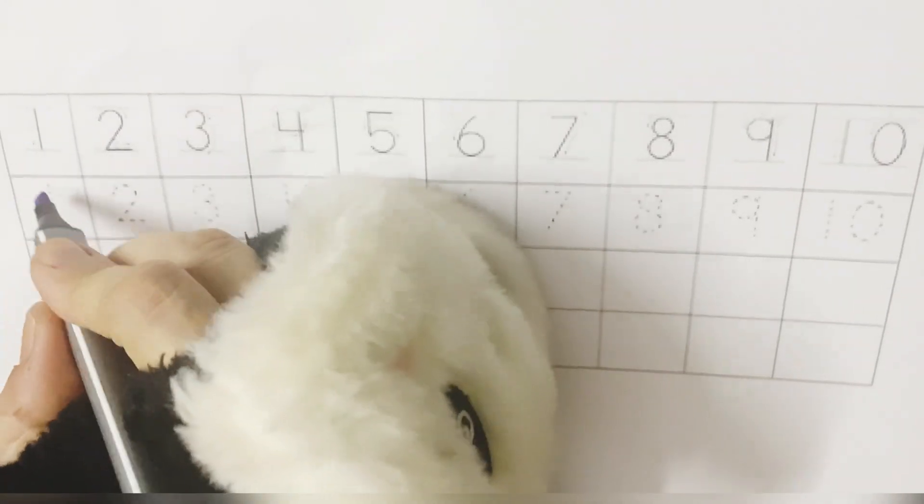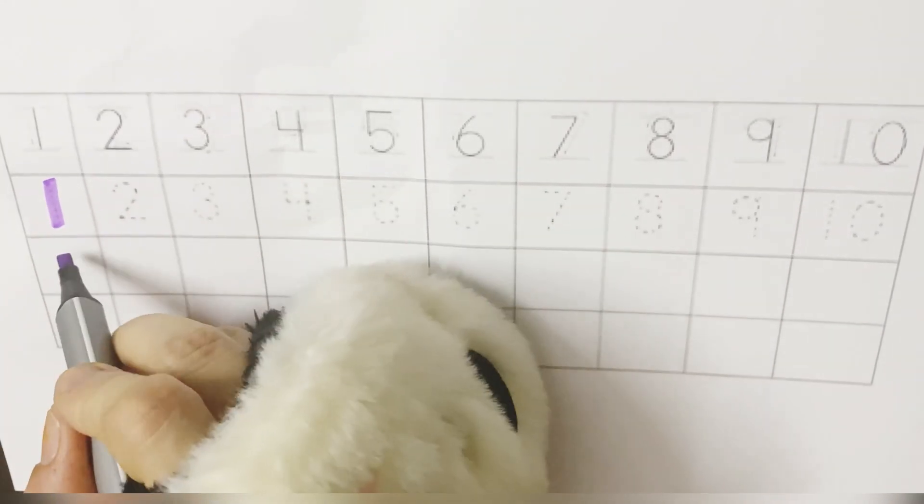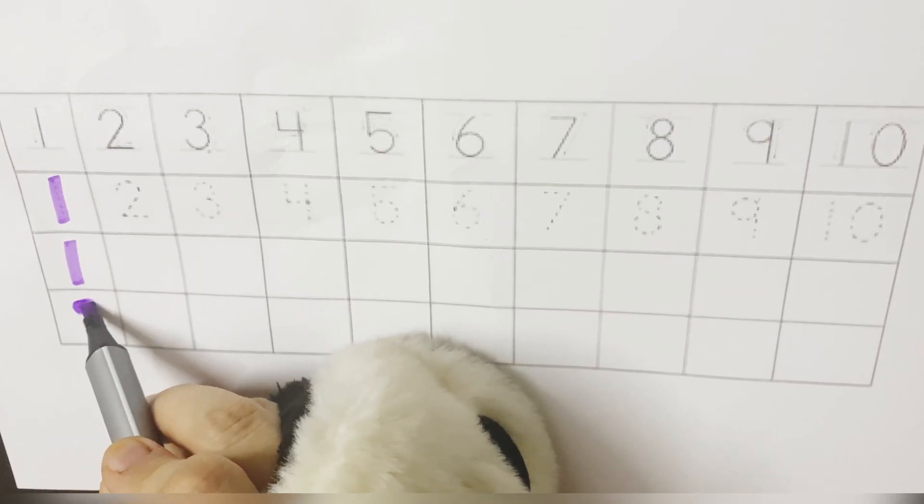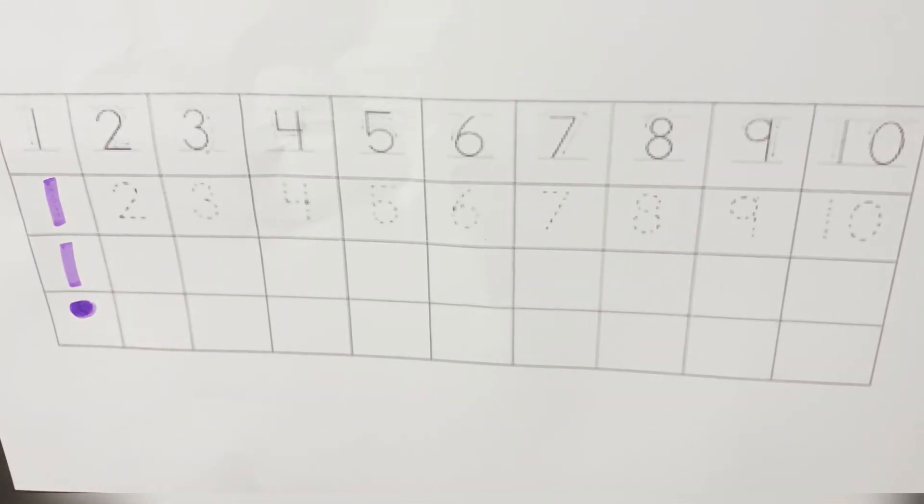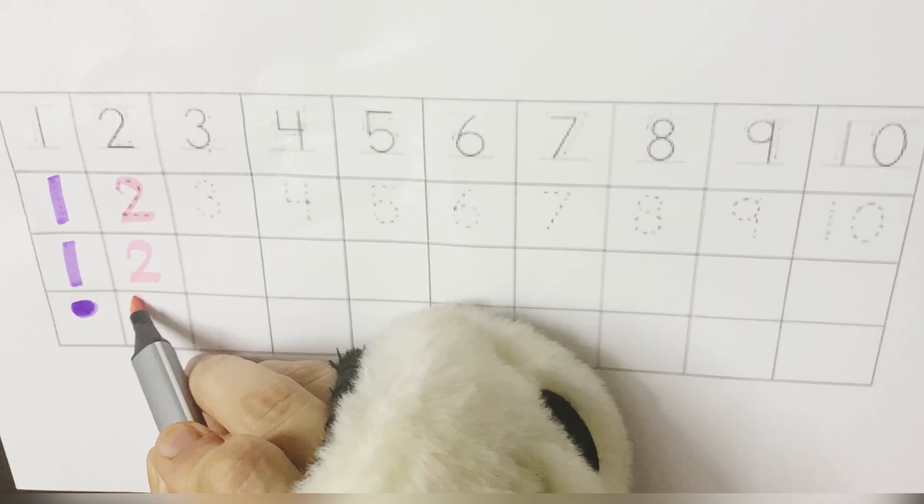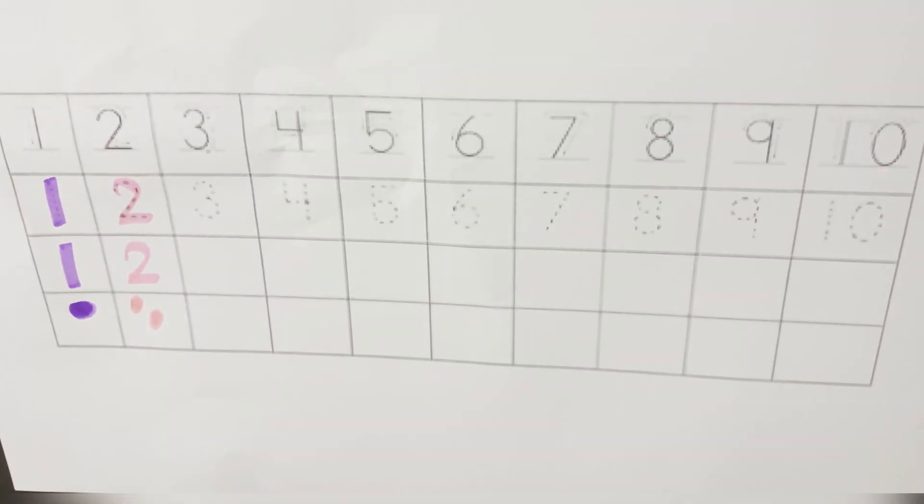Wow! Start with the number one. So how many dots will we draw here? One. What comes after one? It's two. Two dots here. One, two.